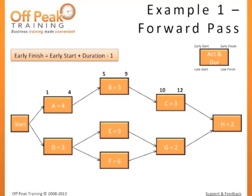Let's move down to Task D. This task can begin as soon as the project begins, so its early start will be the beginning of day 1. Using our formula, 1 plus 3 minus 1, the early finish is 3. Since Task E depends on D, it cannot start until after D's early finish, or the beginning of the fourth day. Using our formula, 4 plus 6 minus 1, the early finish is 12. Task F also depends on D, so it cannot start until the beginning of the fourth day. Using our formula, 4 plus 6 minus 1, the early finish is 9.